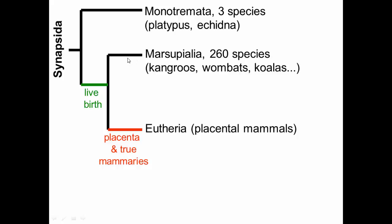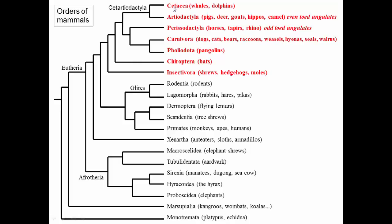There are two major groups: marsupials, which give birth to very small offspring — kangaroos, wombats, and koalas — and then eutherians, who via a true placenta develop larger offspring. They give birth to larger offspring that then drink milk from true mammary glands. These are placental mammals, and that's where humans are. In this video, let's look at the orders of mammals from cetaceans through insectivores.